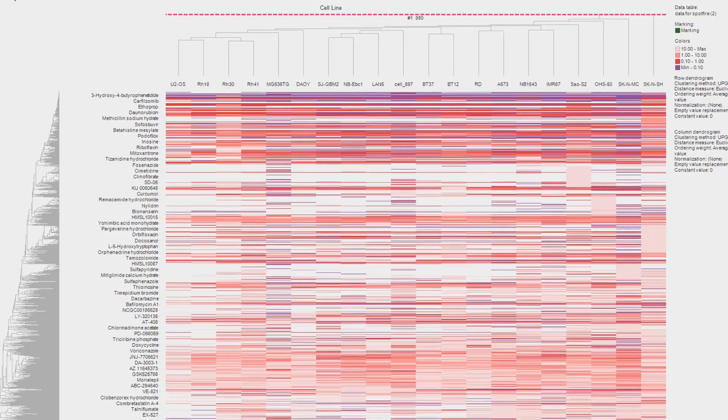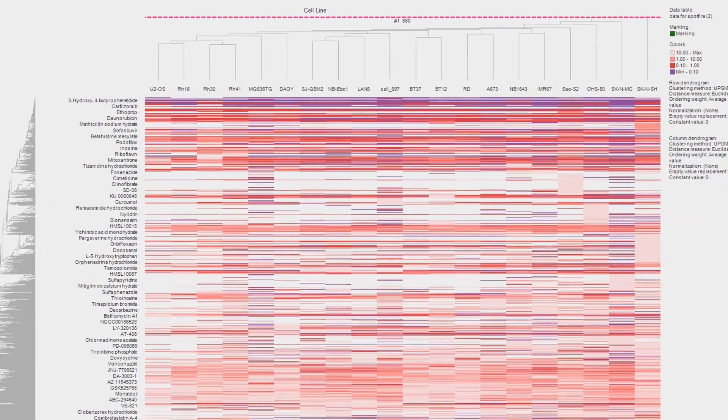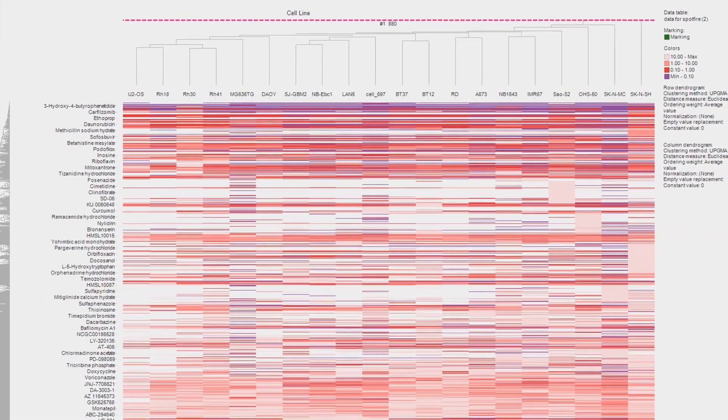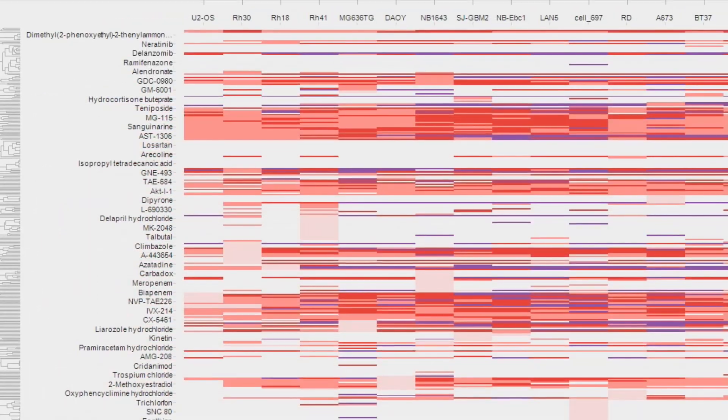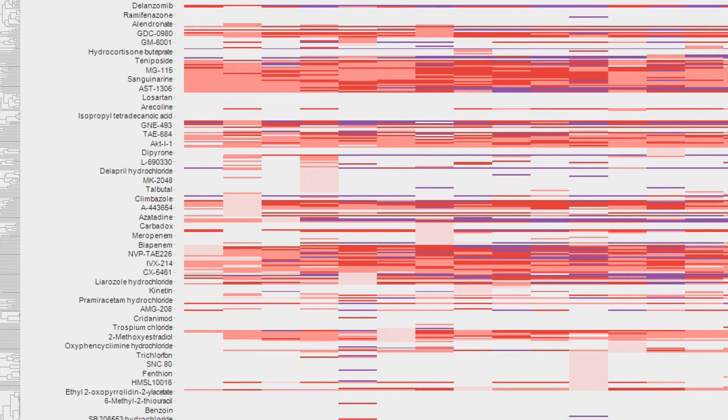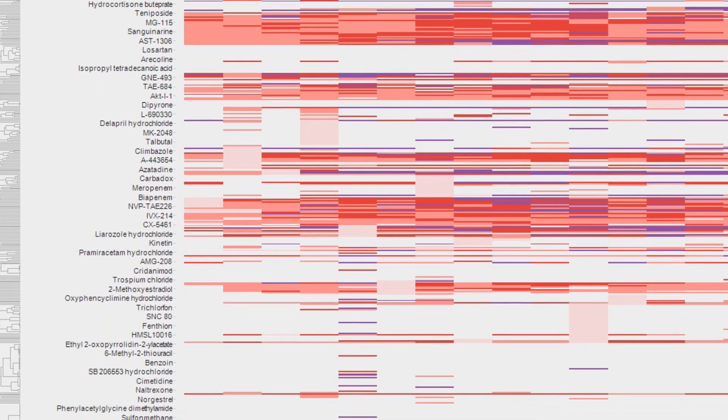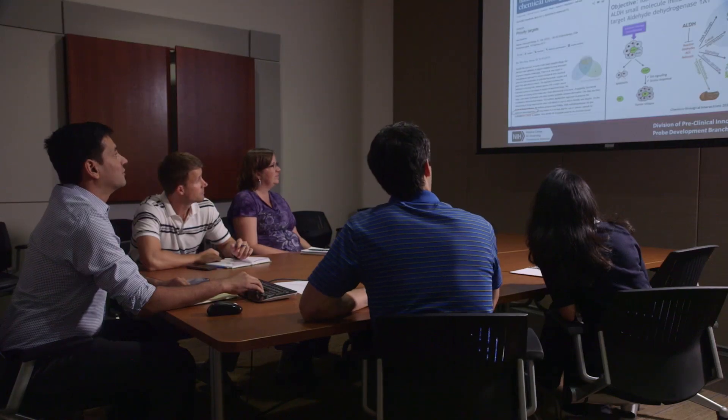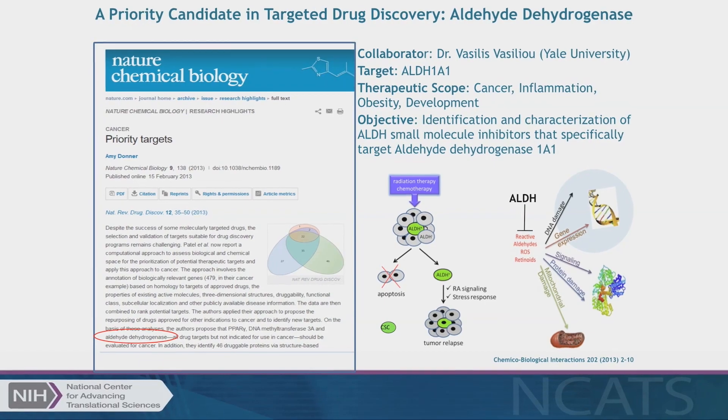The information from the robot plate reader is converted into numerical data, and NCATS informatics and computational researchers analyze the results from the robotic screen to identify the compounds that showed activity. The informatics researchers and biologists then work with NCATS medicinal chemists to determine the most promising compounds to work on.